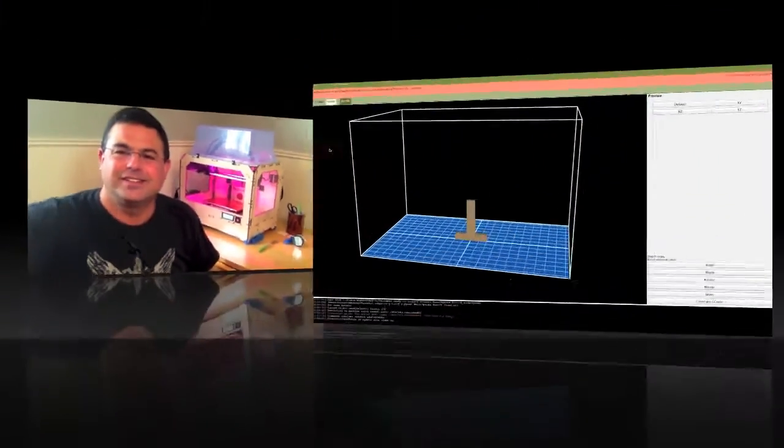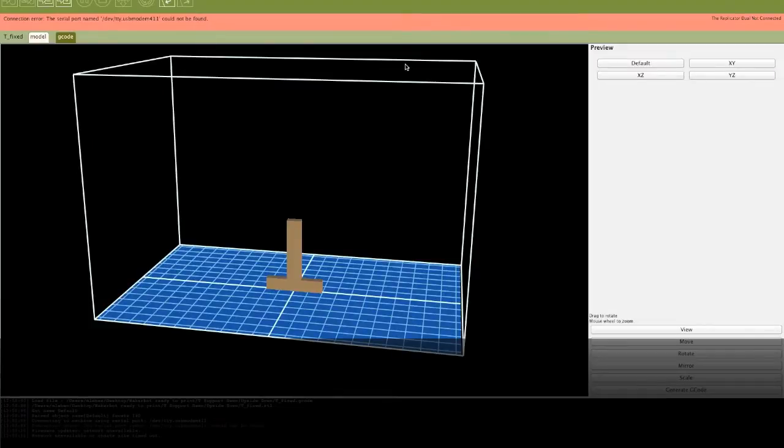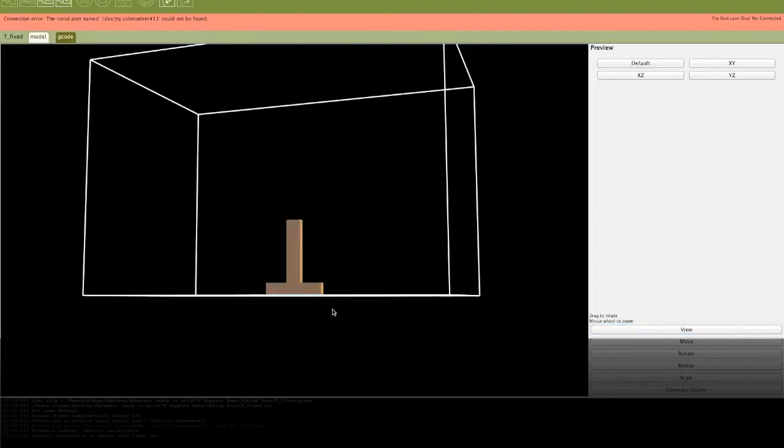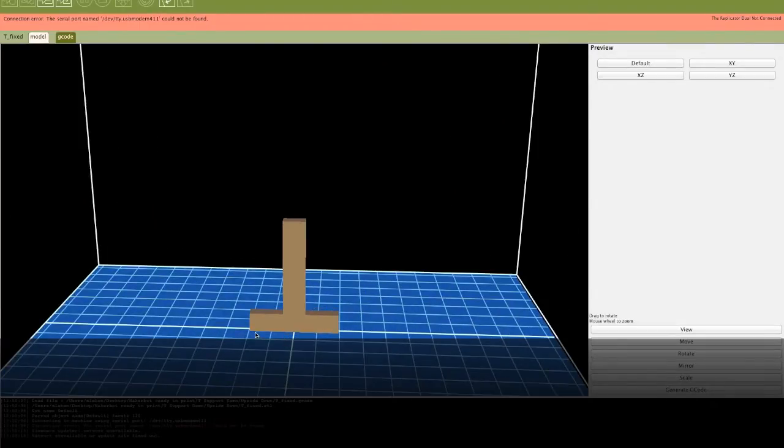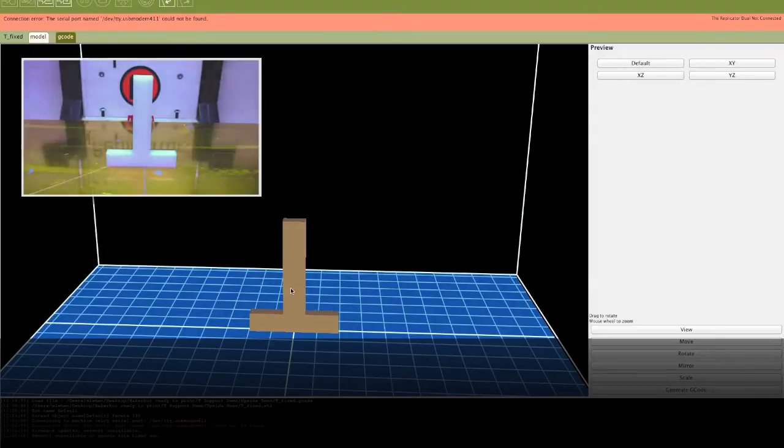This area here represents the build space of the Replicator 1, and here's our T and it's upside down. We can print this way without support. The way this will work is the printer will print the first layers here along the bottom. It'll go up and up and up, it'll complete the cross, and then it'll print and it'll complete. And there's no problem here, there's no overhang, there's no need for support.